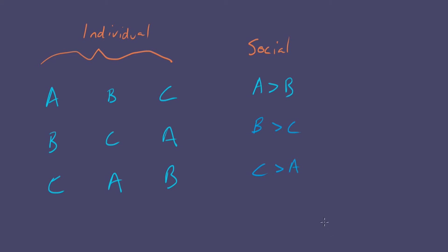So, is there one option that beats all others? A beats B, so it's a candidate — but A is beaten by C, so A is not a Condorcet winner. What about B? B beats C, so it's also a candidate — but A beats B, so it can't be a Condorcet winner either. What about C? C beats A, but C is beaten by B. So there is no Condorcet winner.